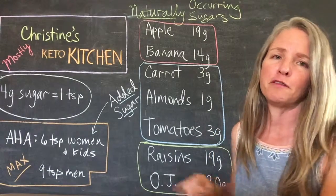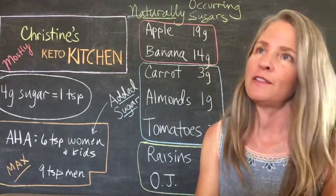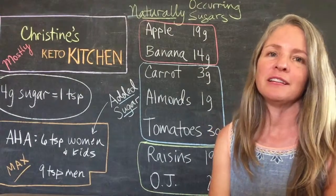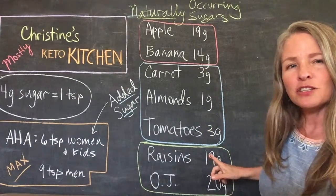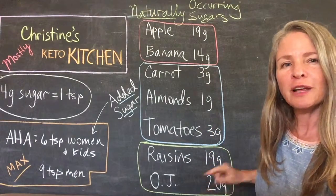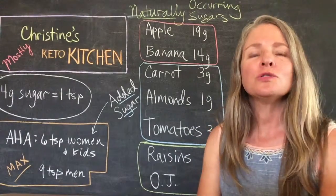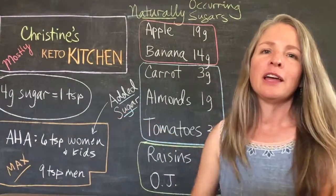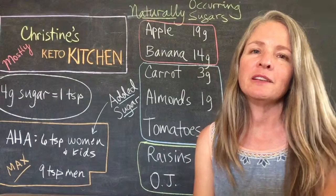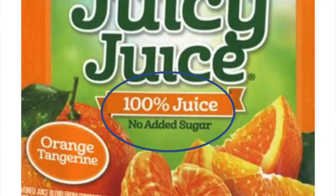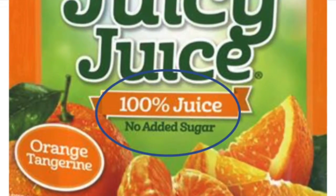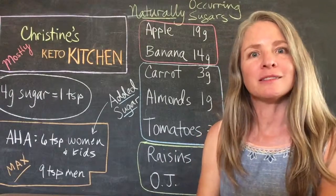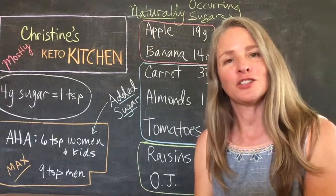Similarly, with any kind of fruit juice, there's very little fiber left. Even if a juice label says no added sugar, it's pretty much just sugar — you squeeze out the juice and sugar, and the fiber gets left behind, along with most of the protein and fat.